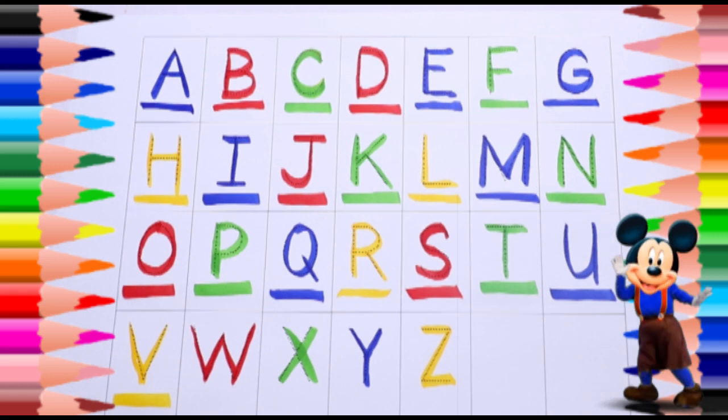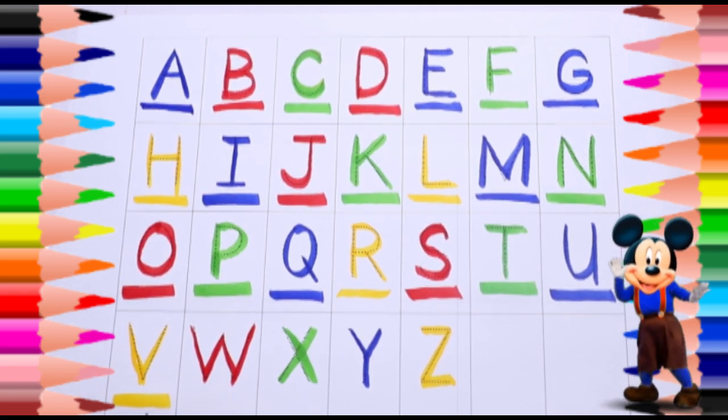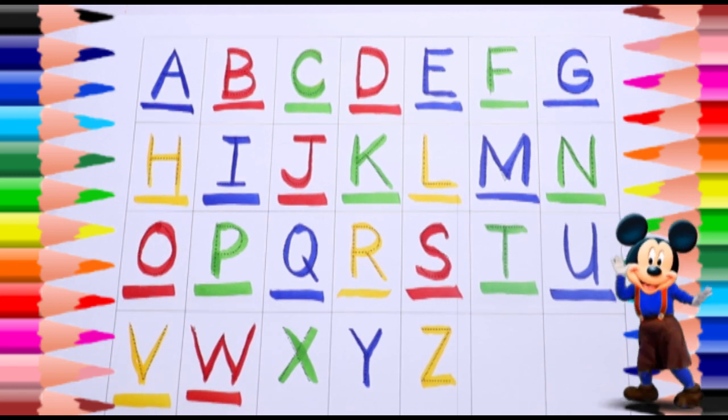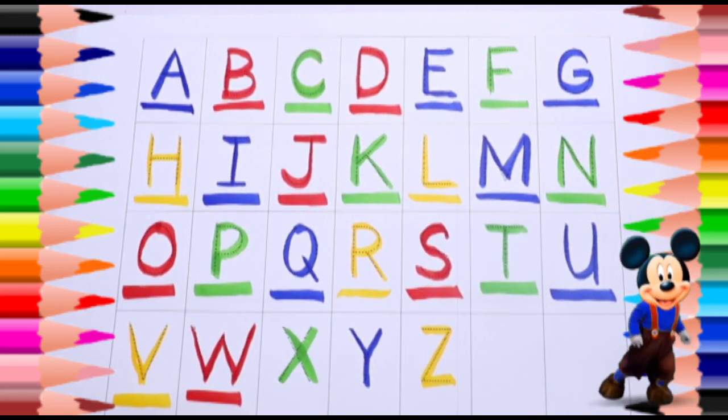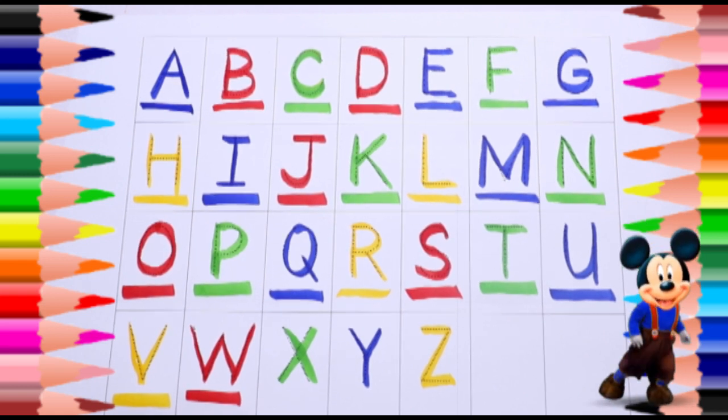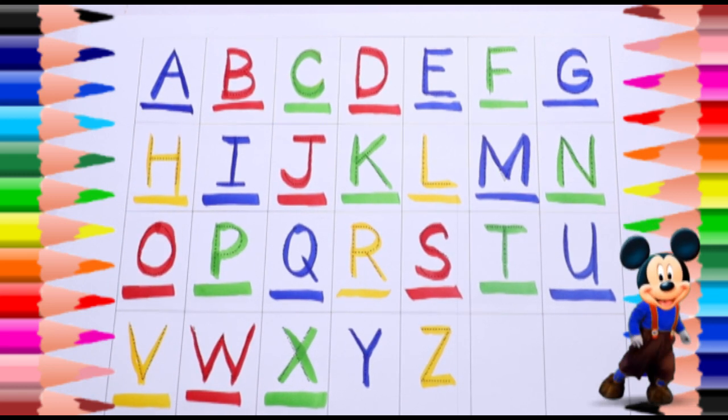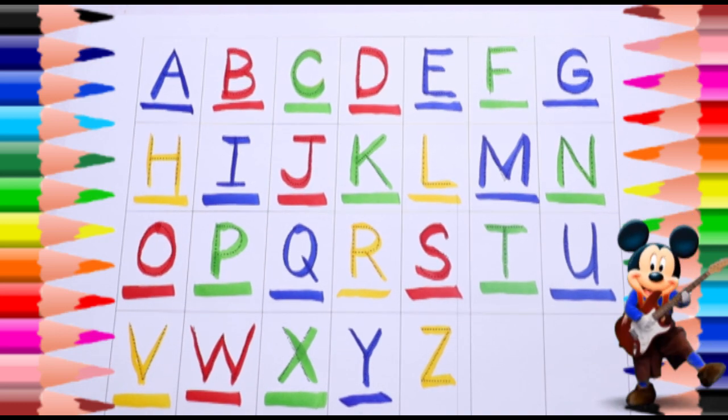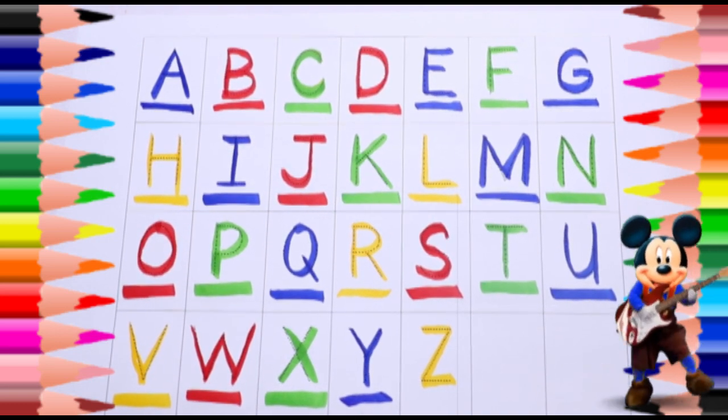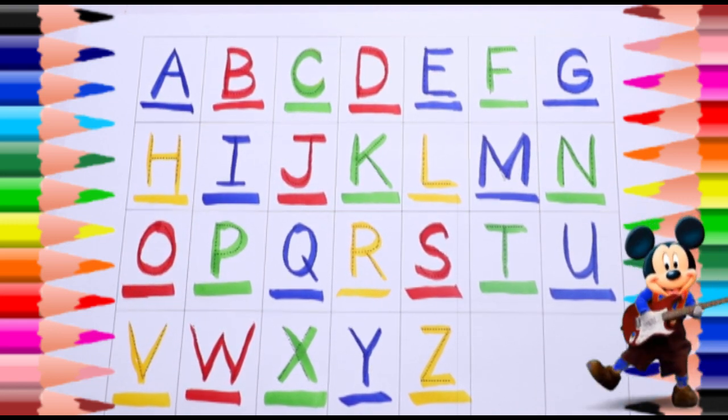Red color W, W for watch. Green color X, X for xylophone. Blue color Y, Y for yak. Yellow color Z, Z for zebra.